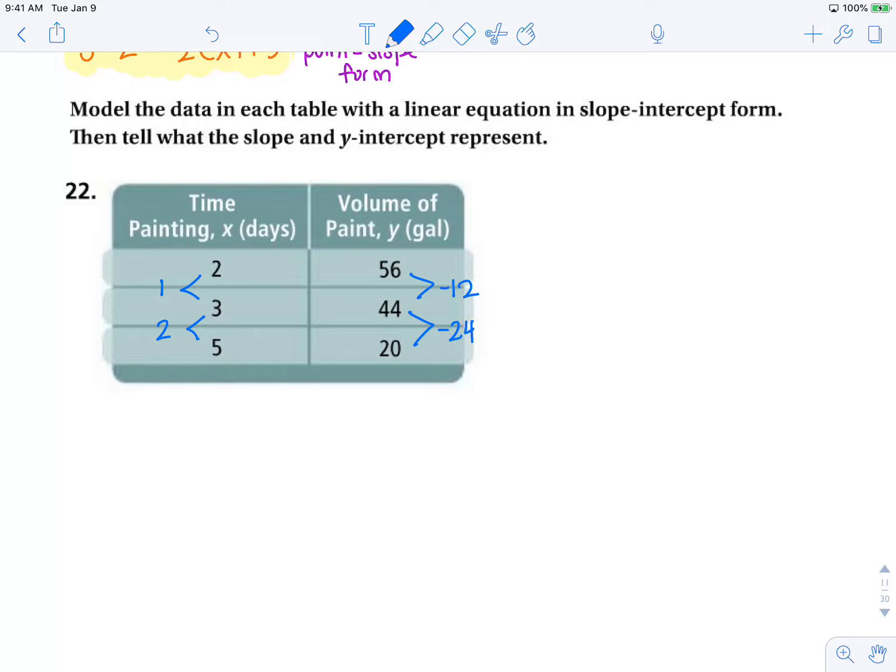Now looking at this, you might say there is no constant rate of change. But what we have to see is, is that rise over the run the same? So our slope, negative 12 over 1, is that equal to negative 24 over 2? And yes, it is. So our slope is negative 12.